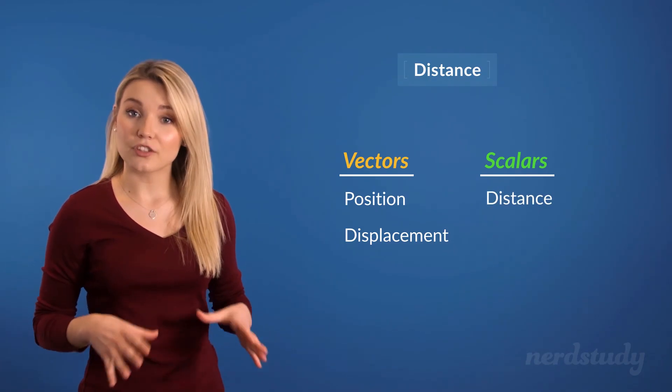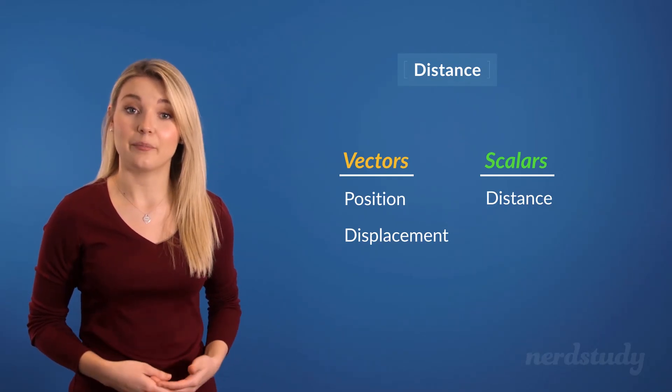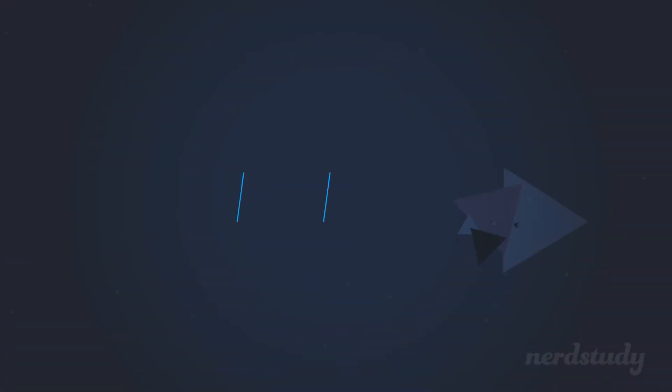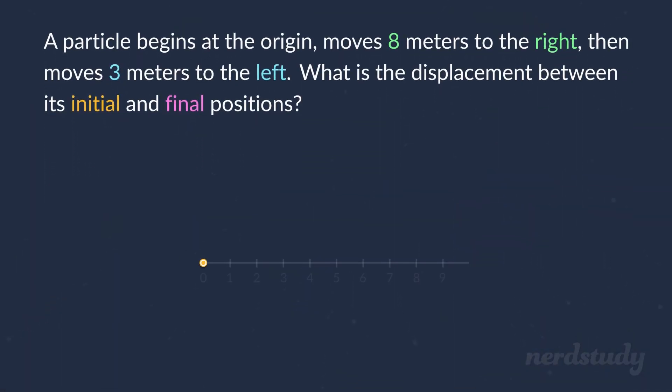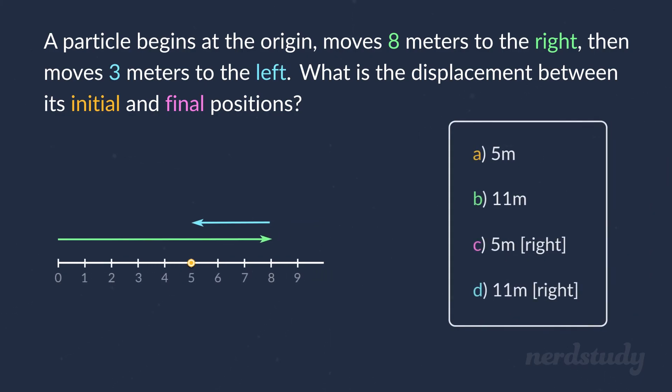Alright, so let's go ahead and test our understanding by doing some examples. So, a particle begins at the origin, moves eight meters to the right, then moves three meters to the left. What is the displacement between its initial and final positions?